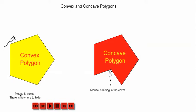Look at that, a mouse. This mouse is vexed! There's nowhere to hide! So this is a convex polygon. This is just a good way of remembering the word convex - the mouse is vexed.